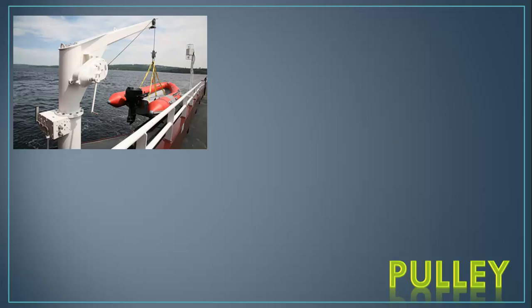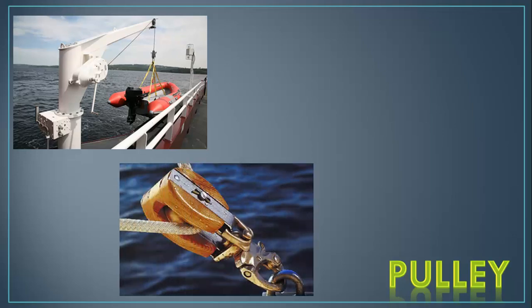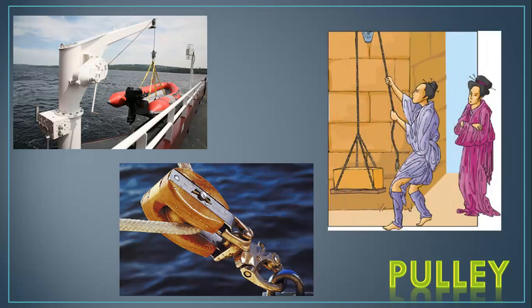Our last example of a simple machine is a pulley. A pulley is used to be able to move a heavy object easier. Again, we're making work easy, reducing the amount of force required. You can see this through this final picture. When this man pulls down on the rope, the pulley is attached to the top of the picture and it allows him to lift a heavy object easier. It requires less force to pull the object up because we're increasing the distance over which the force is applied.